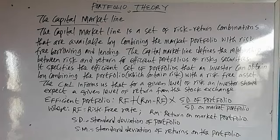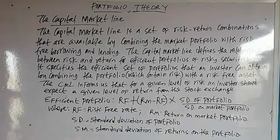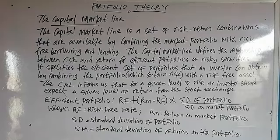When you draw your market line, any combination that falls above — those are the portfolios that give us the best possible combinations. The capital market line is a set of risk-return combinations available by combining the market portfolio with risk-free borrowing and lending. It defines the relationship between risk and return for efficient portfolios. An efficient portfolio is a portfolio that gives us the highest return with the lowest risk.